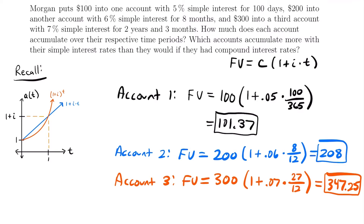So all we have to do is look at which accounts generated interest for a time period less than one year — that's when simple interest generates more. Account one was 100 days, which is less than a year, so it generated more interest with simple interest. Account two was eight months out of twelve — also less than one year — so it also earned more interest with the simple rate. Account three was two years and three months, so the time was greater than one year, meaning it would have earned more interest with a compound rate.